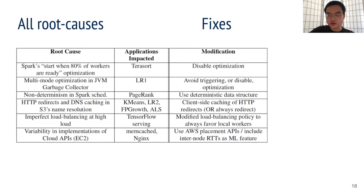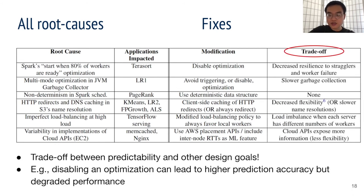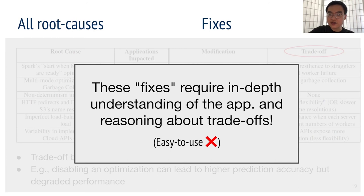Now that we see the fixes are effective, we should notice they introduce trade-offs. Namely, trade-offs between predictability and other design goals that are baked into the application by developers. For example, disabling an optimization can lead to increased prediction accuracy, but at the cost of degrading overall performance. Also, these fixes require in-depth understanding of the application, as well as reasoning about design trade-offs. So in these cases, machine learning fails to be an easy-to-use predictor.